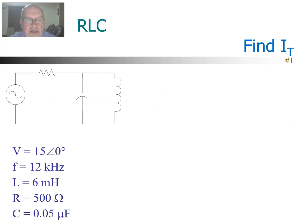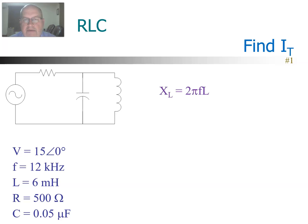Here we have a resistor and then a parallel combination of a capacitor and inductor. The first thing we're going to do is to convert the inductance and the capacitance into reactances. We have to find X of L and X of C. X of L is 2π F L. Plug our numbers in, and we get X of L = 452 ohms.